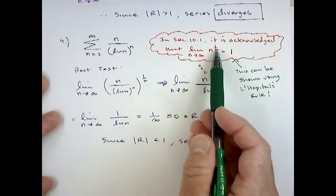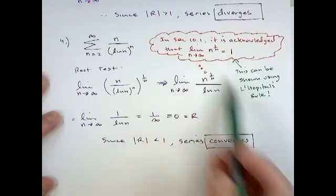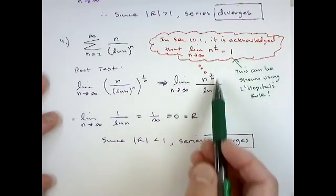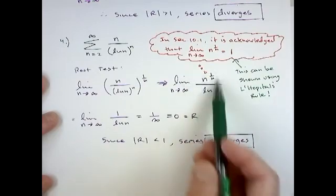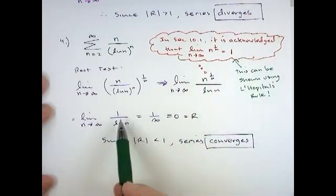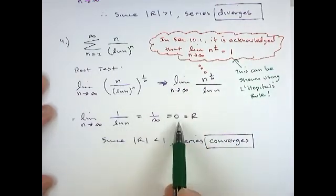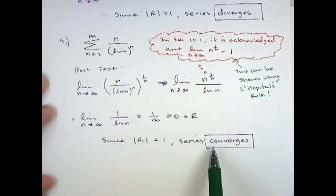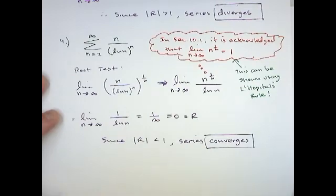This has the form of infinity to the zero. And it can be shown using L'Hopital's rule that that limits equal to one. And so the book acknowledges it. So if you ever see this, n to the one over n as n goes to infinity, that's just going to go to one. So we have one over ln of n, which is one over infinity, which is zero. And that would be our r value for the root test. So the series would converge.